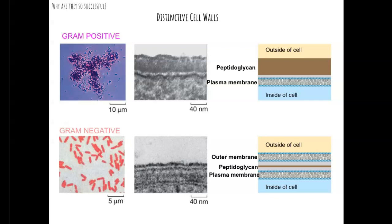That distinction becomes important when we're talking about ways to treat bacterial infections with antibiotics. Because of those layers, bacteria are either labeled as gram-positive or gram-negative. Gram-positive bacteria, when stained with crystal violet stain, have a really thick peptidoglycan layer that absorbs a lot of the stain, turning the bacterial cells purple. Gram-negative bacteria have a very thin layer of peptidoglycan, so less of the molecules are absorbed and those bacteria turn a pinkish-red color. We use that test to determine gram-positive or gram-negative status, which tells us about the structures outside their cells.